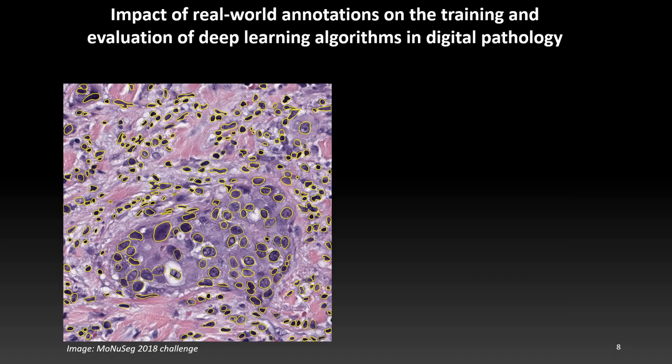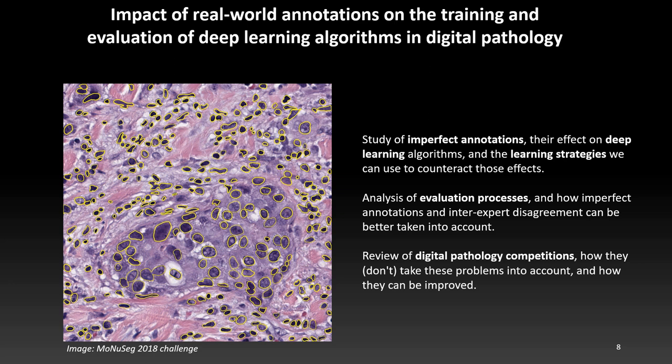So that brings us back to the title of the thesis. What is the impact of the reality of the annotations we can get in digital pathology, on the training of deep learning algorithms and also on their evaluation? There are three big topics that I want to cover in the rest of this presentation. And for each, I will show some examples of our experiments and explain the conclusions that we were able to reach. The first is the study of imperfect annotations and their effects on the learning process. The second is the analysis of evaluation processes and metrics, and how imperfect annotations and inter-expert disagreements can be taken into account better. Finally, I will talk about our review of digital pathology competitions, how they take or don't take these questions into account, and how they can be improved in the future.